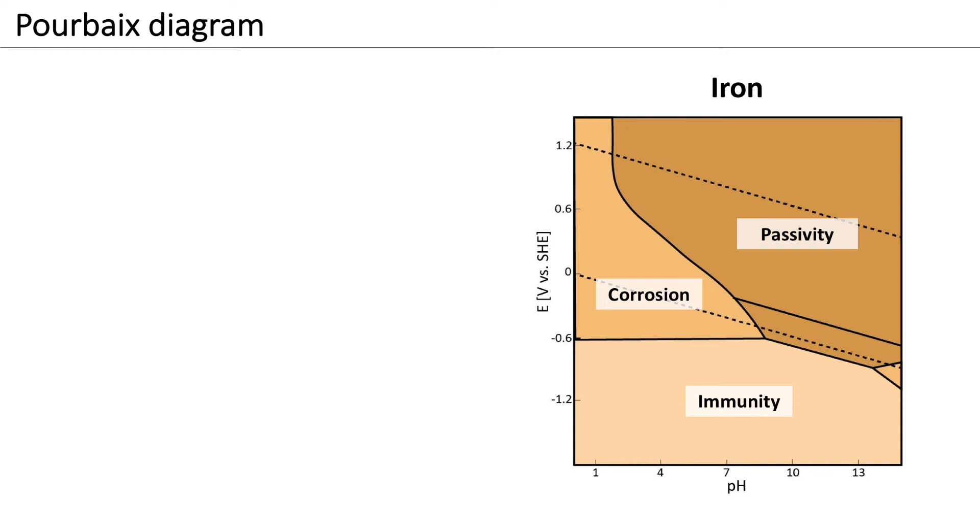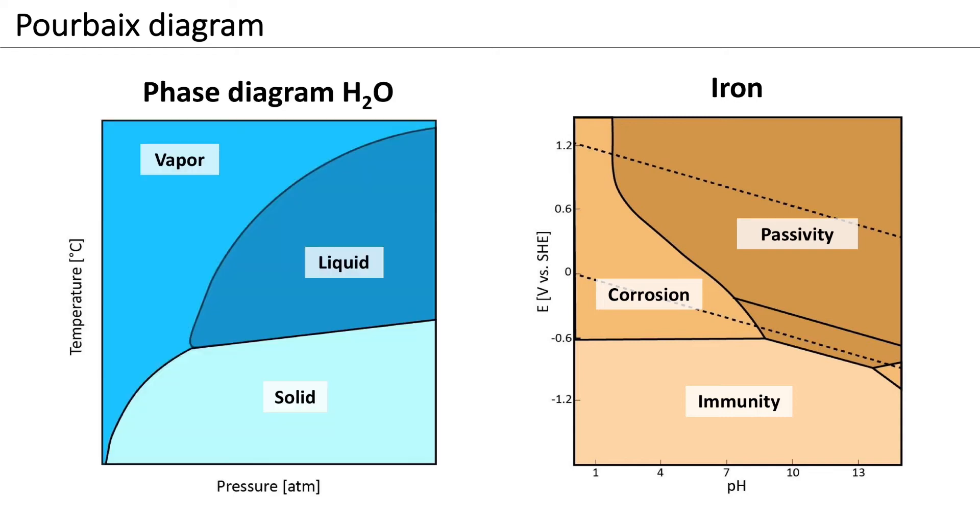Pourbaix diagrams may be considered like phase diagrams, where for a certain temperature and pressure the stable phases are indicated. Consider the example of water at ambient pressure. The liquid and solid phase are at equilibrium at 0 degrees Celsius. The stable phase of water is the liquid phase between 0 and 100 degrees Celsius.